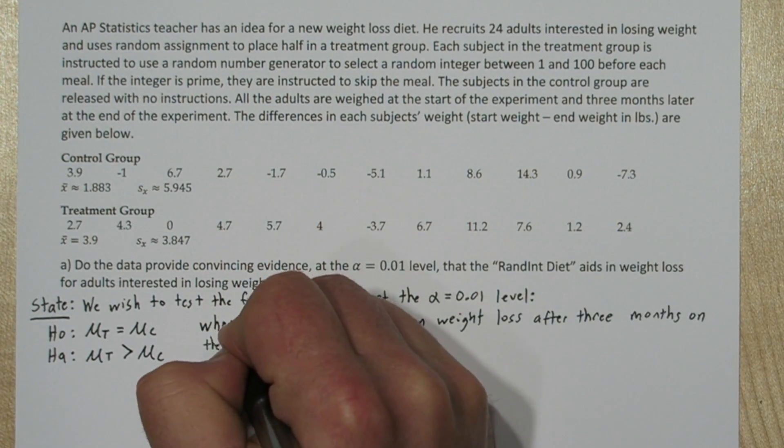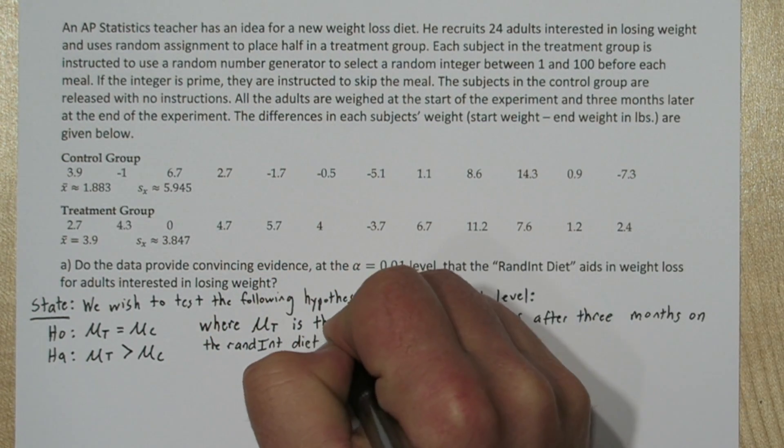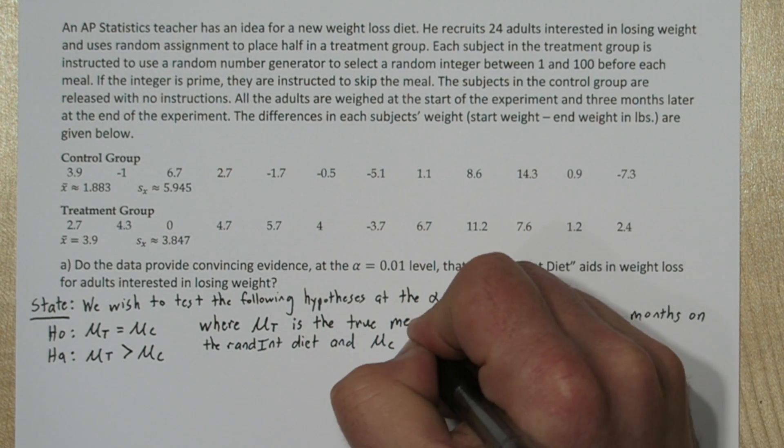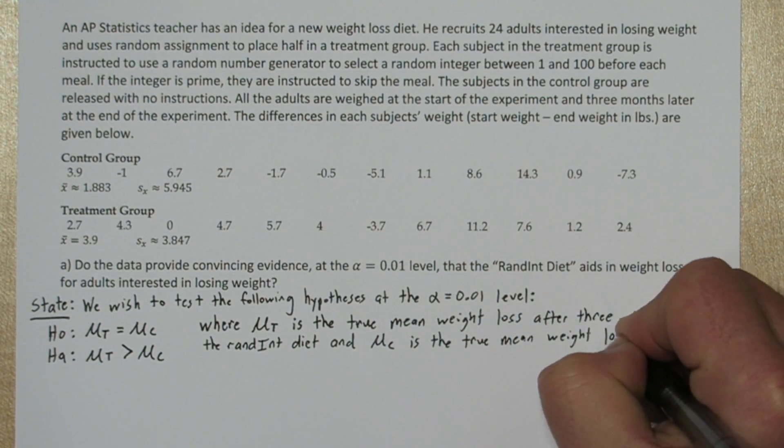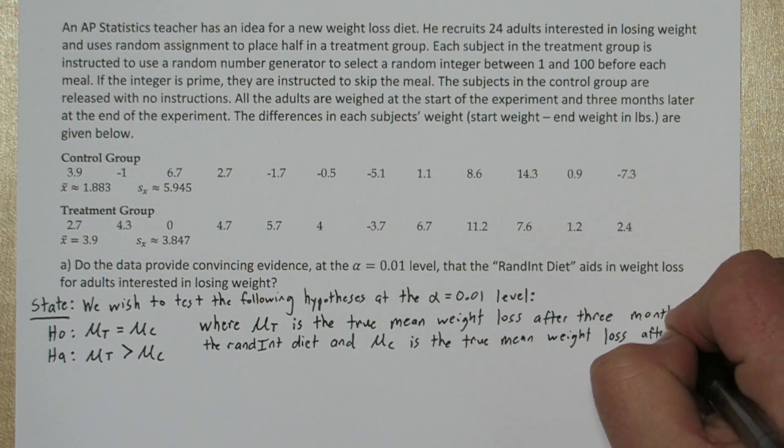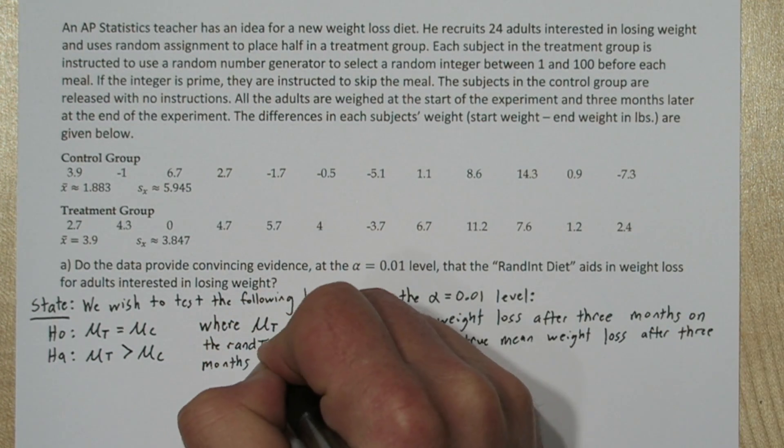And we need to define our parameters. So we'll say where mu sub t is the true mean weight loss after 3 months on the Randon diet, and mu sub c is the true mean weight loss after 3 months with no instructions.